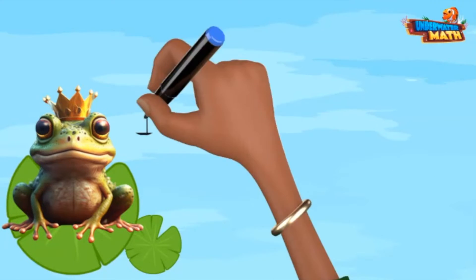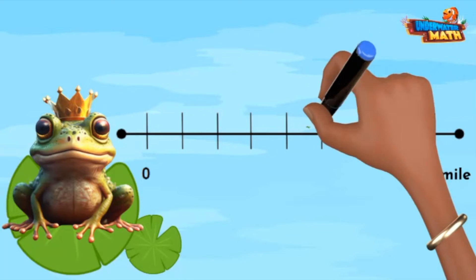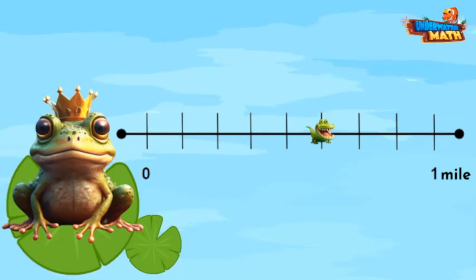Hop to it. Here comes another number line floating up. The location of my friend, Allie the alligator, represents the fraction of a mile she had to walk to come visit me at the pond today.